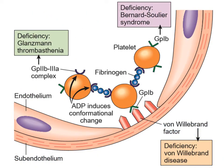This picture shows GP1b receptors — depicted as V-shaped green structures on the platelet surface — attached to exposed collagen via von Willebrand factor. The GP2b3a complex is also shown. The diseases caused by deficiencies of these receptors are illustrated: GP1b deficiency results in Bernard-Soulier syndrome, and GP2b3a deficiency results in Glanzmann's thrombasthenia.